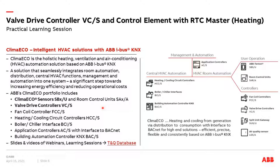ABB offers a holistic automation solution for heating, ventilation and air conditioning based on ABB iBus KNX. This allows seamless integration from the room level via distribution and central HVAC functions to the management and automation level. This is a significant step towards increasing energy efficiency and reducing operating costs. The ABB ClimaEco portfolio includes room operating elements, sensors, room control units, valve drive controllers, fan coil controllers, heating/cooling circuit controllers for distribution, and on the automation level: the boiler chiller interface, BCI application controller, and building automation controller. We have given numerous webinars and online learning sessions about all these products, and you can find the recordings and presentations in our training and qualification database.